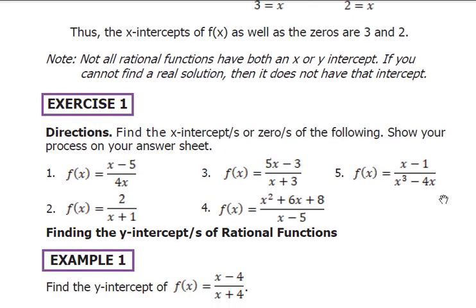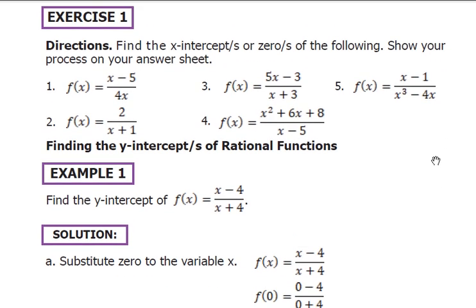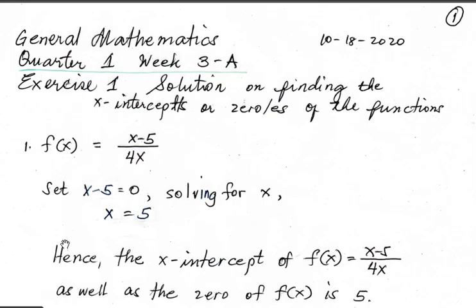Let's move on to Exercise 1. We have 5 numbers to solve. Let's read the direction — the direction is important in solving or in taking any tests. The direction of Exercise 1: you have to find the x-intercepts or zeros of the following, and you have to show your process in your answer sheet.